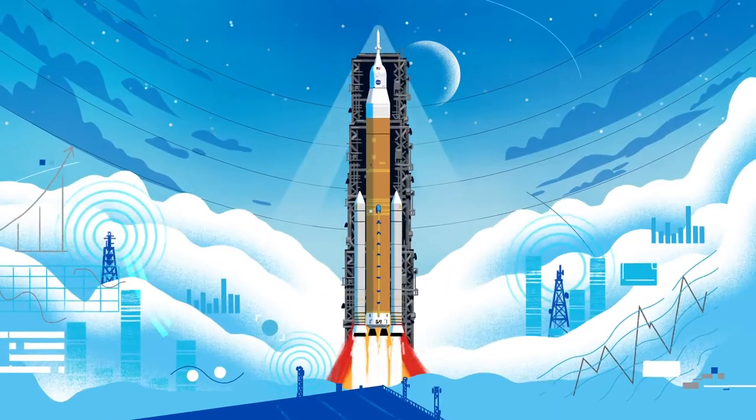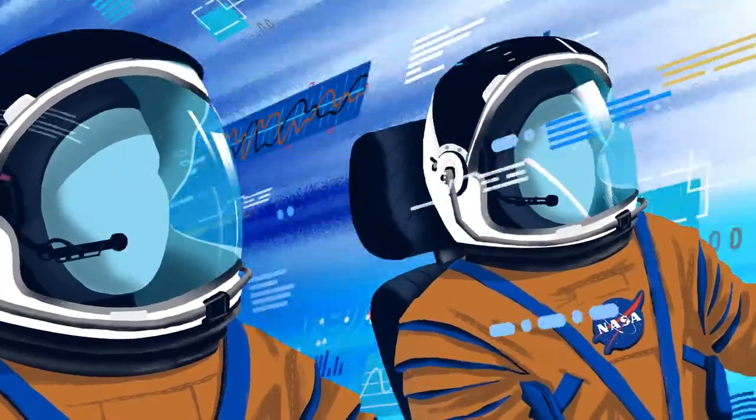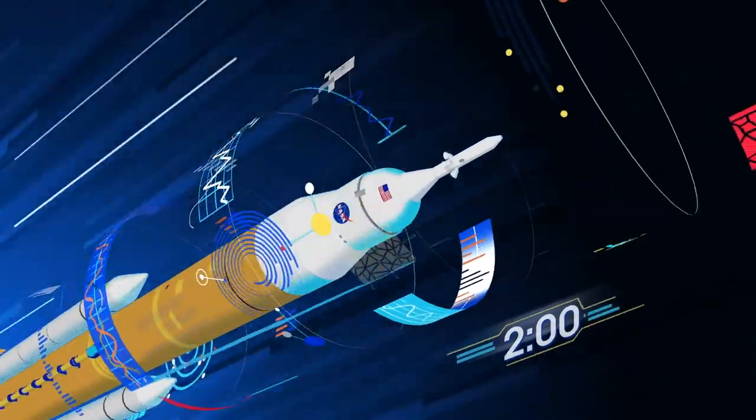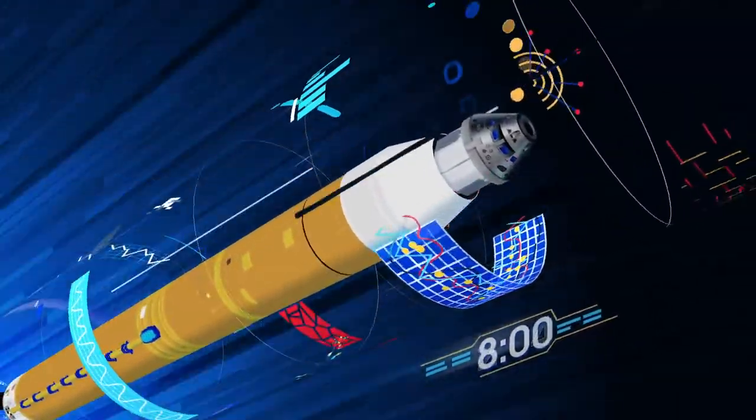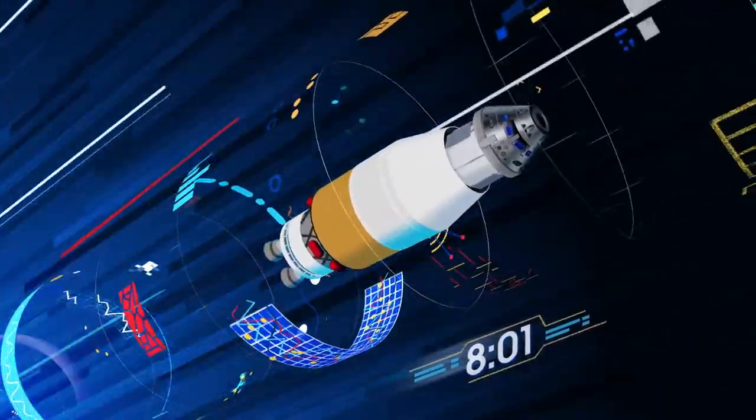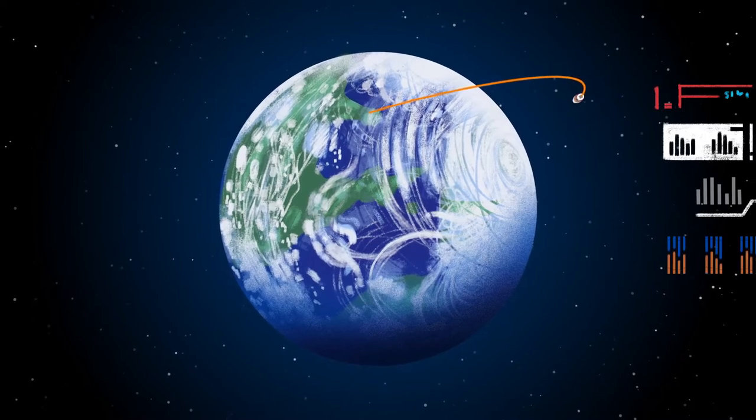All four RS-25 engines and the two solid rocket boosters come to life, thundering our crew upwards. Two minutes after ignition, the solid rocket boosters are spent and released. Eight minutes after launch, the core stage is depleted and separated. The upper stage fires briefly, placing Orion into a parking orbit around the Earth.